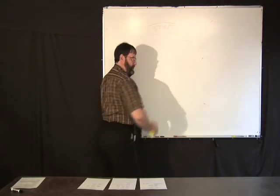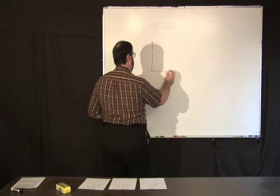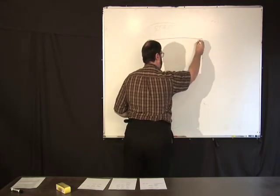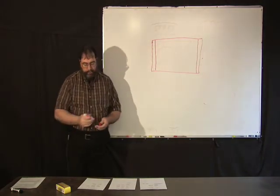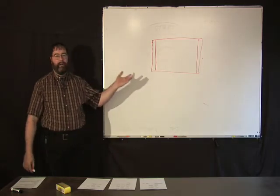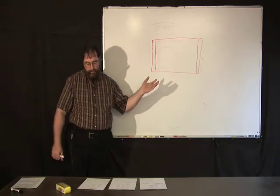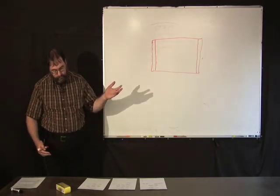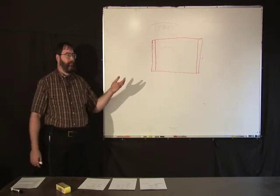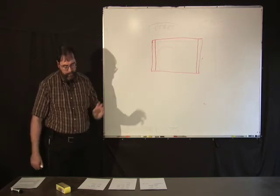Boxes are process steps. You might run across a box that looks like this with two lines on either side. That's called a predefined process that's defined somewhere else. This could be like a standard operating procedure or maybe it could be a subroutine if this is defining a computer algorithm or something. That represents a predefined process.